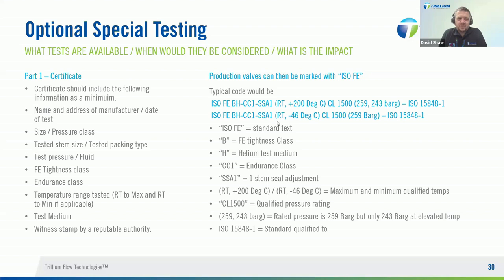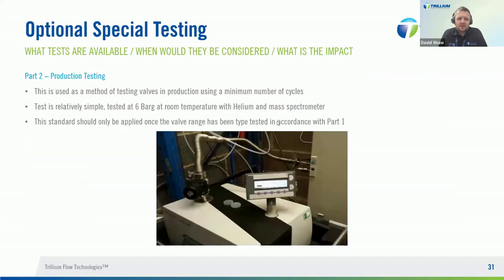Once you've done the prototype testing and are manufacturing valves to the prototype design, you can then do what's called a Part 2 production test or sniffer test. This is a much simpler test — you're testing the valve at 6 bar G using helium as the test gas and a mass spectrometer to detect any leakage. This type of test should only be conducted once the valve has already undergone a prototype test, and is just to ensure there are no issues with the manufacturing or assembly process.